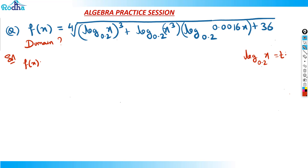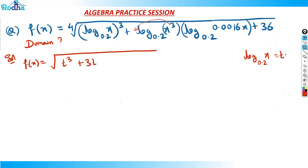Now f(x) is equal to — under root — this part will become t cubed. Now here, by the property of log, the 3 was the whole log cubed. But here, the 3 is the argument cubed, that is x cubed. This 3 will come out, and this becomes 3t.